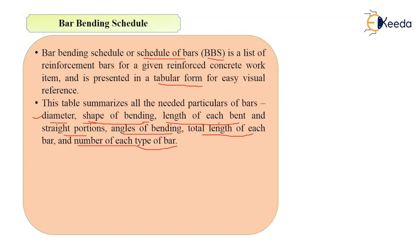As you know, in RCC structures every bar has to be bent up to a certain length. So the length of each bend is given in the bar bending schedule. Then angles of bending — there are various types of bends in the BBS, meaning we bend the bar or steel reinforcement at 135 degrees, 90 degrees, or 45 degrees. Various bending angles also come under the bar bending schedule. Then total length of each bar and number of each type of bar are also given.